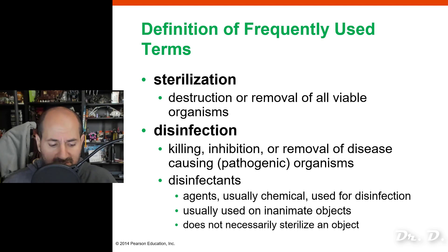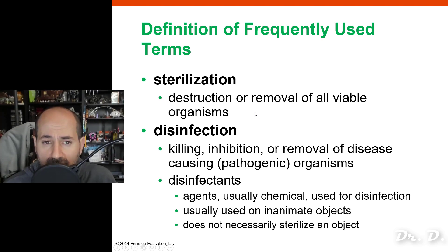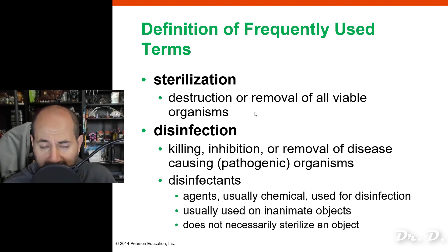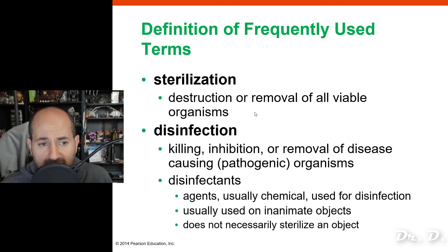Sterilization is the destruction or removal of all viable organisms — destroy everything, including spores and endospores. Nothing can survive sterilization. In the lab, we sterilize things with flame; even endospores will die. Another typical way in the healthcare setting to sterilize things is using an autoclave, which we'll talk about later.